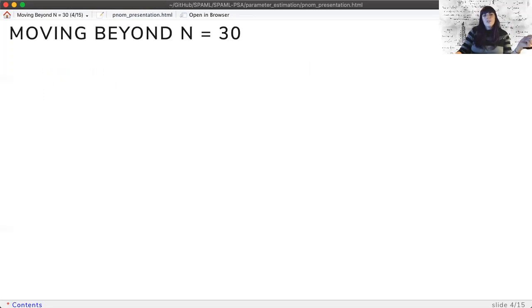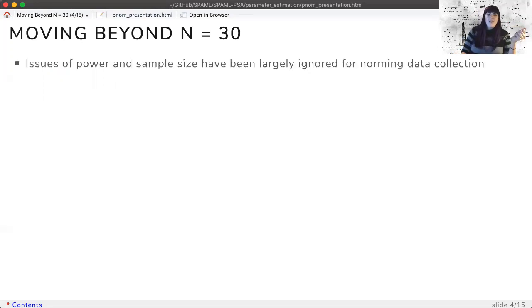Often, the choice is to meet some minimum or well-established criteria like n equals 30. The issue of power and sample size planning has been mostly ignored for norms data collection.